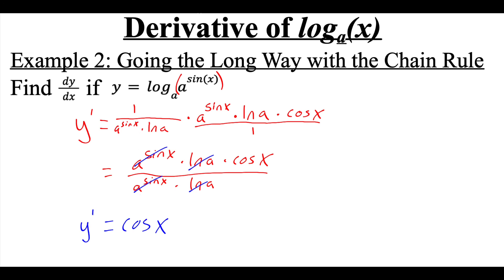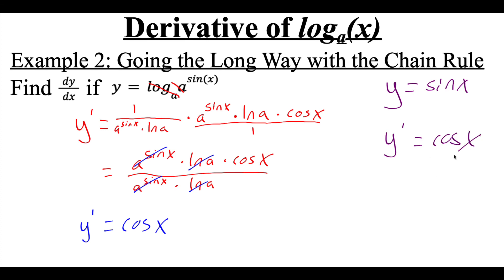So that's the long way. The short way: if you have a log with a base that matches the base of your exponential, those are inverses of each other, so they actually cancel each other out. So we could have canceled those out right away from the beginning, which then turns our equation into just y equals sine of x. And then the derivative of sine of x is the cosine of x.